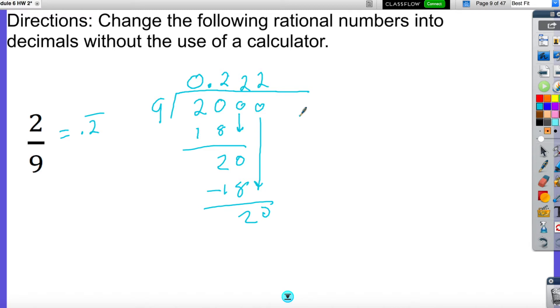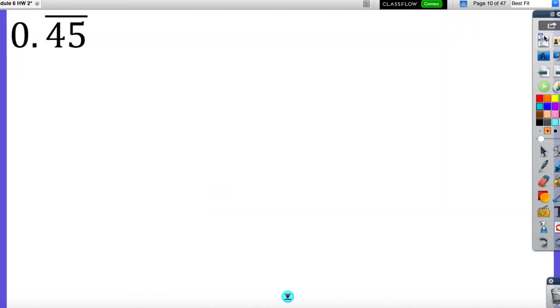That's great, but what happens now if I'm given the other way around? Let's say I have 0.45 and it is repeating over and over. Now, first thing I want you to notice, I'm going to show you the shortcut. Whenever you have a decimal and then right after the decimal it's the number that's repeating, so we have 45.